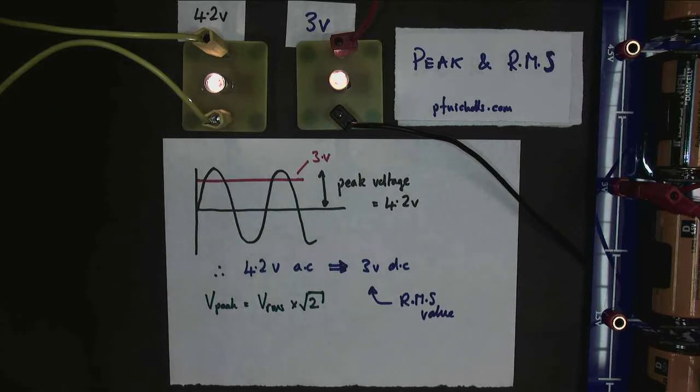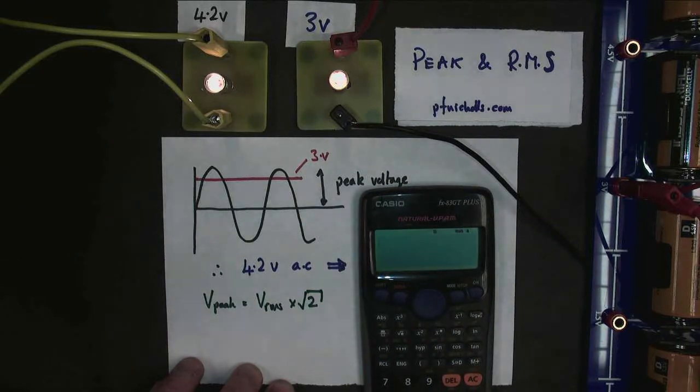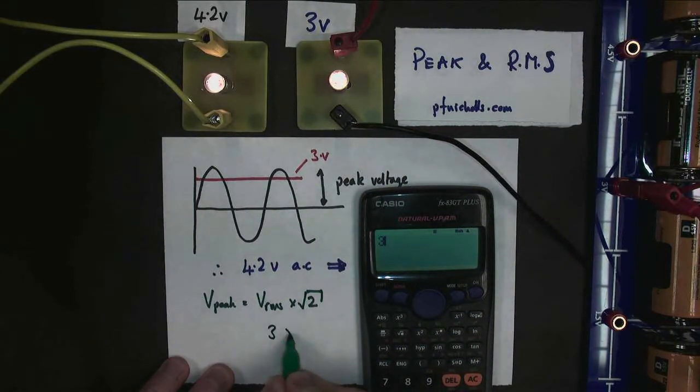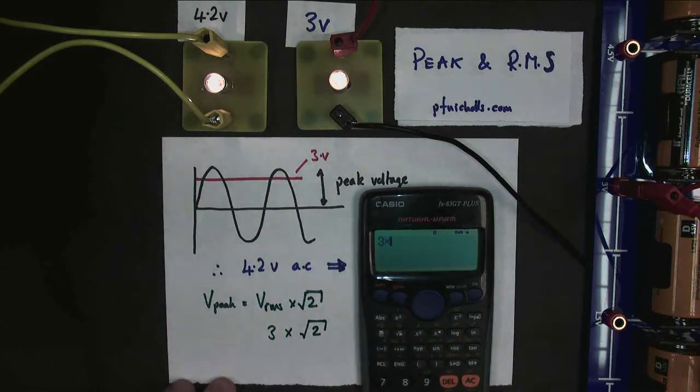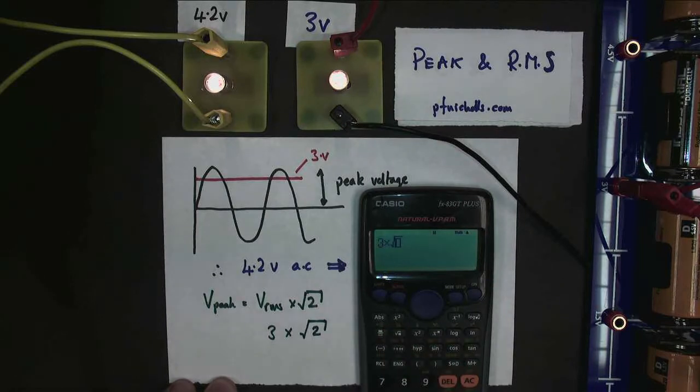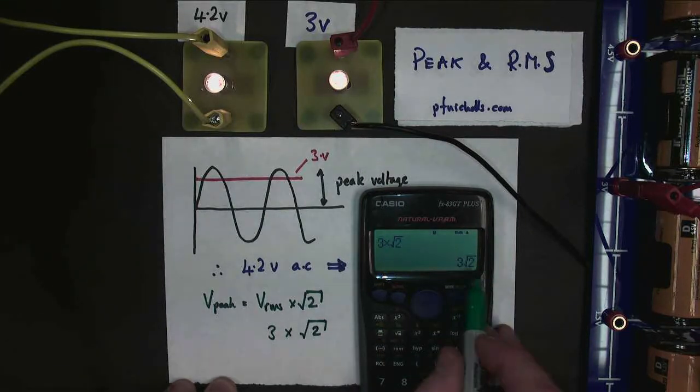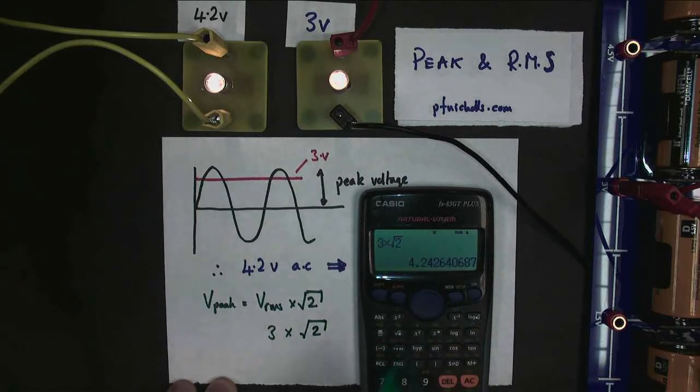So what we'll do is we'll take our calculator and we'll do our RMS voltage, which is 3. We'll multiply it by the square root of 2. You've got to love this calculator. And it tells me it's equal to 3 root 2. Thanks a lot for that. But if we convert it, it actually shows it's 4.2 volts, which is exactly what we found in our experiment.